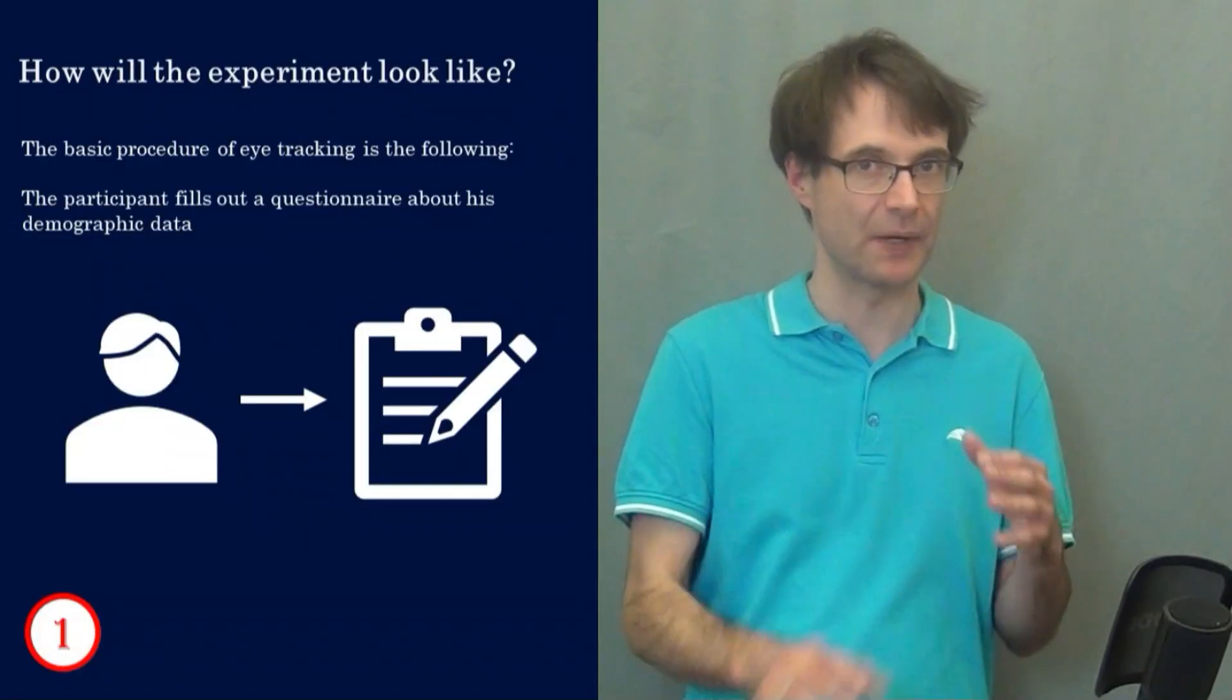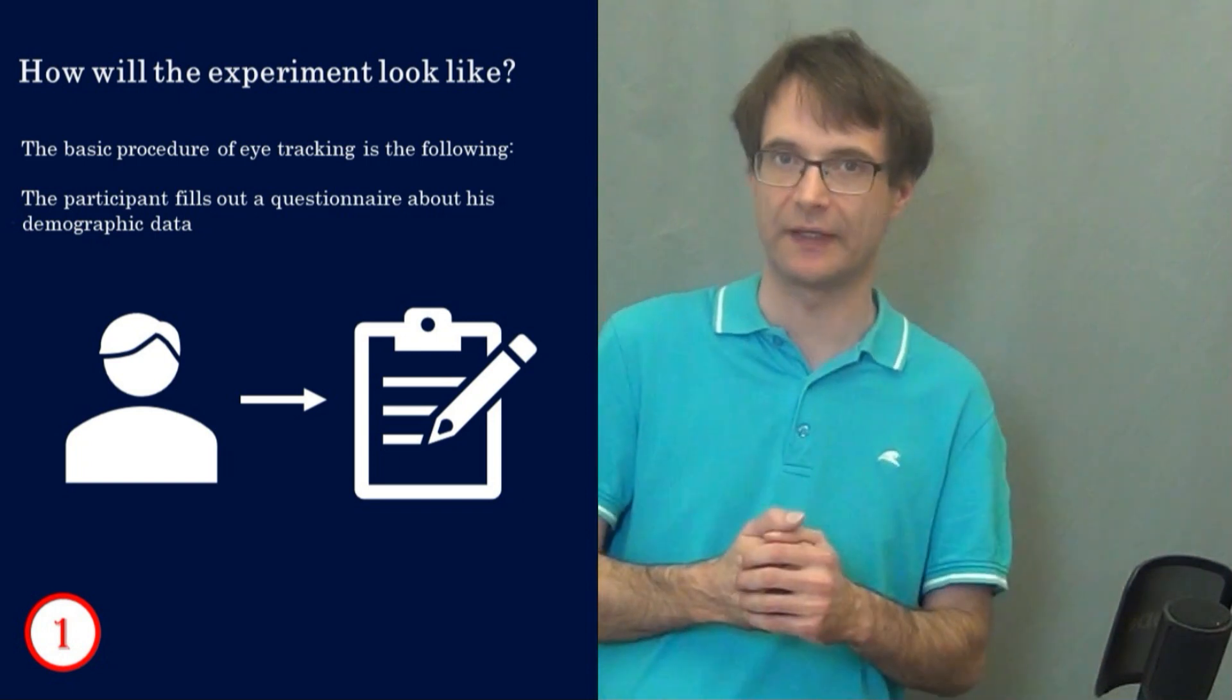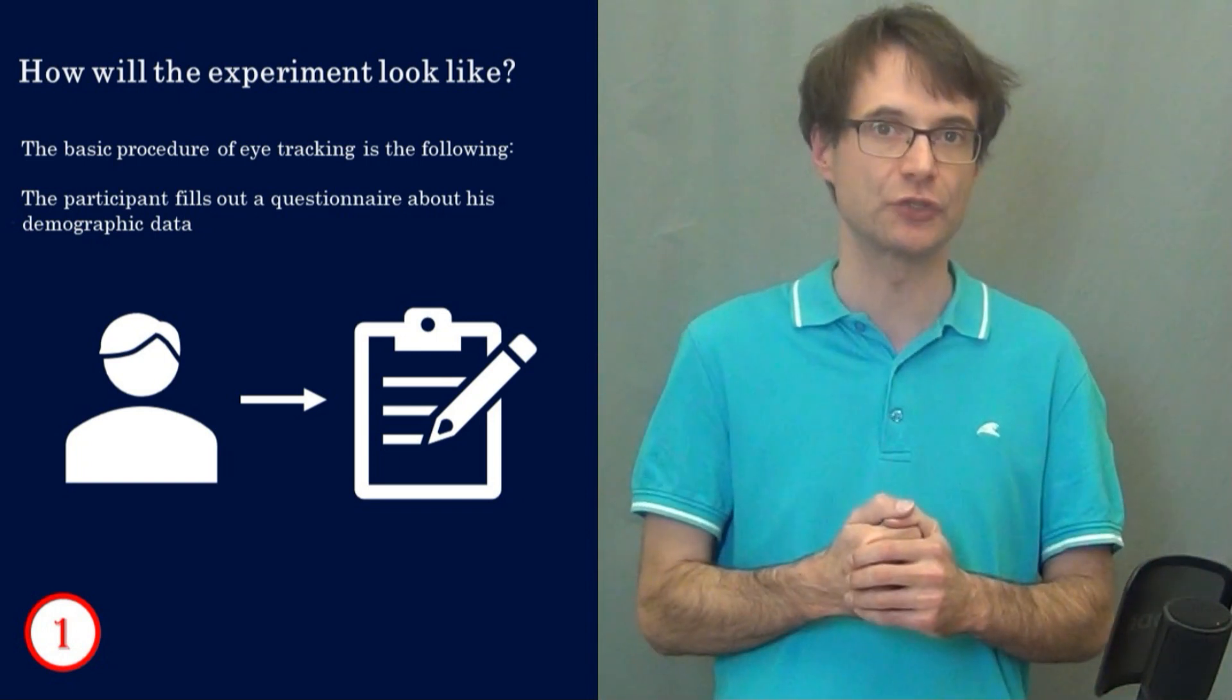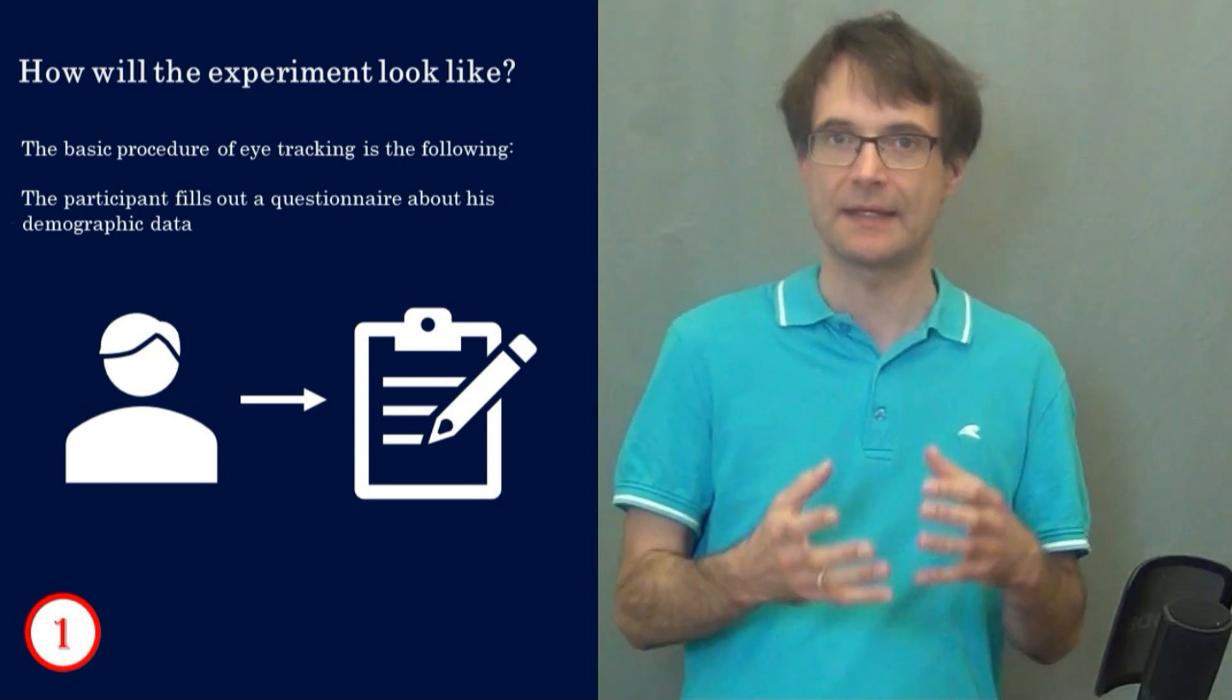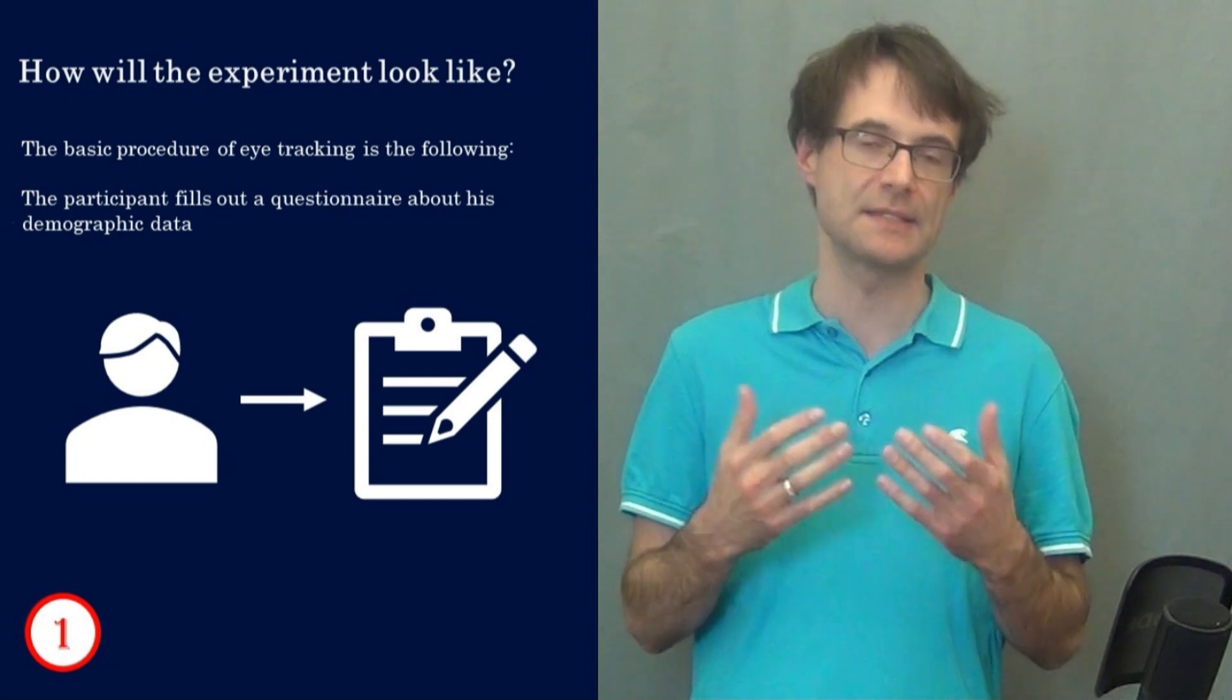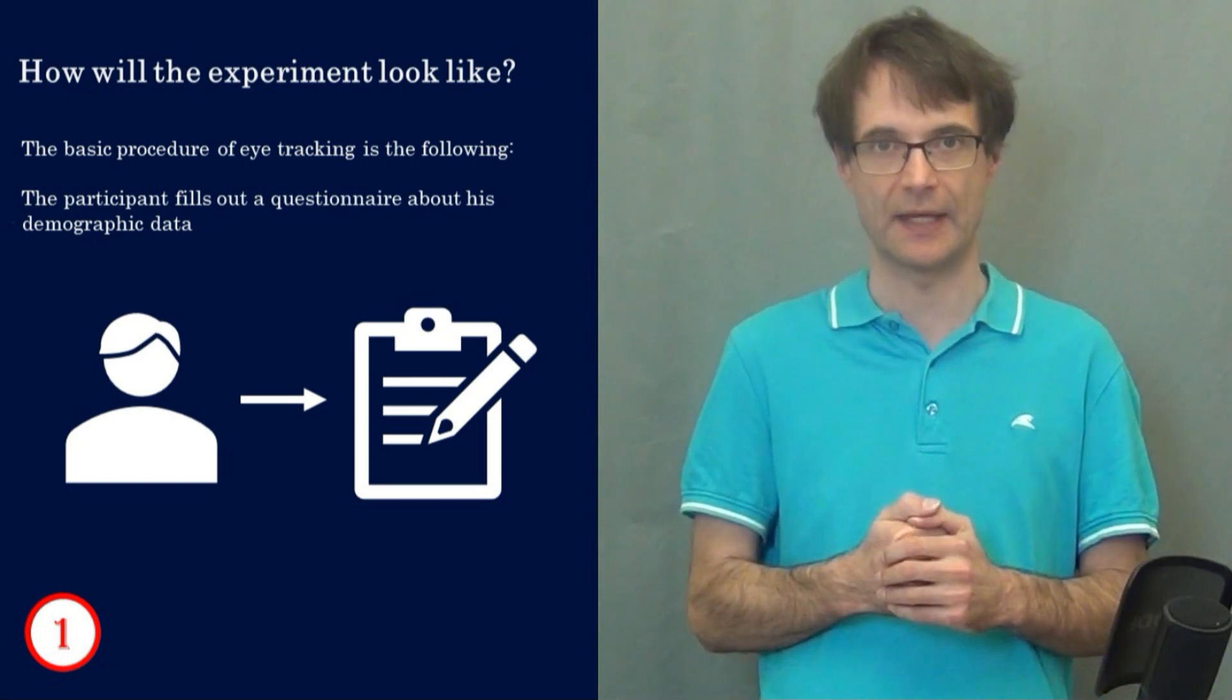In general the basic procedure of an eye tracking experiment is the following. After being greeted the participants fill out a questionnaire about their demographic data and they also indicate whether they have knowledge in the field about the task. By filling out this questionnaire and analyzing the results we can minimize the influence of confounding variables in the experiment.